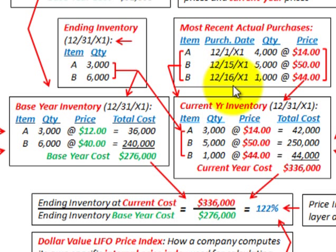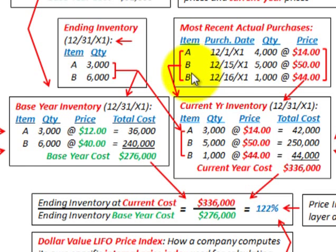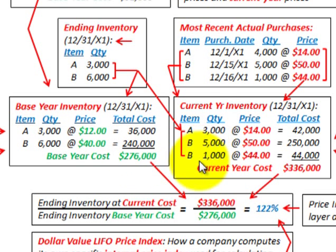When using the double extended method, the base year cost is straightforward since it's based on base prices. For the current year cost, you look back at the most recent prices for each inventory item in ending inventory. Start with your ending inventory amounts, calculate both base year costs and current year costs from those ending inventory amounts using most recent prices. That covers calculating our price index using the double extension method for inventory costs.